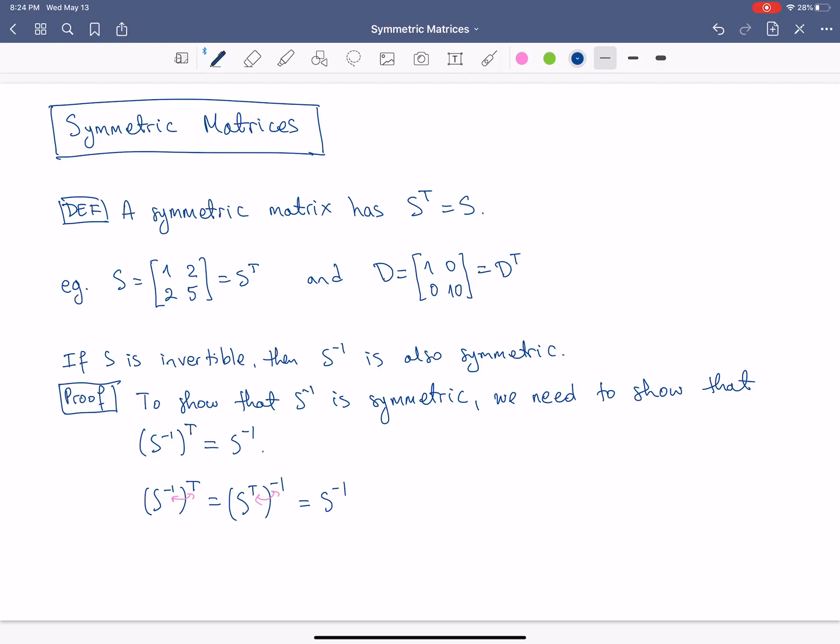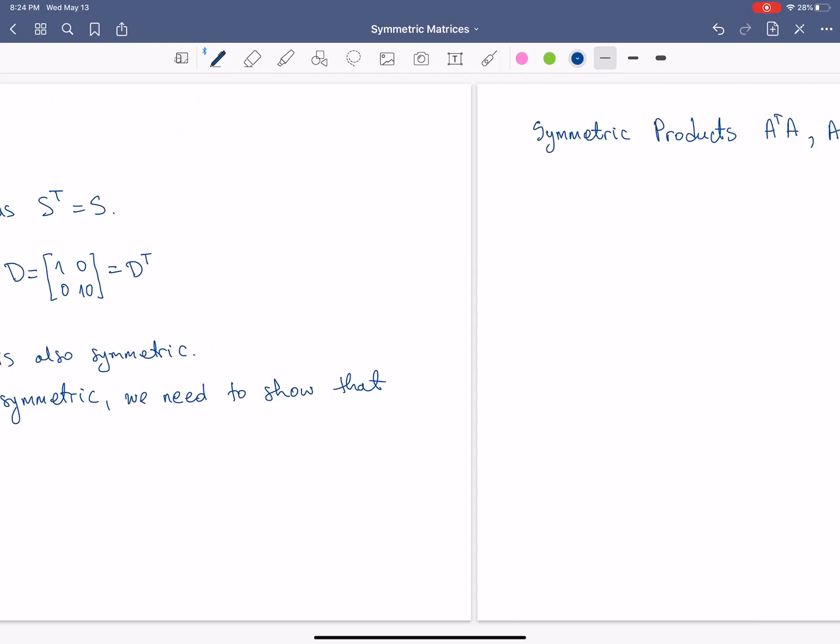So we proved this very, very, I mean, this is a one-liner proof, nothing special, but it gives us something quite powerful, that symmetric matrices are sort of a group on their own. When you try to take some basic operations like an inverse, you kind of stay in the club, if we can think of it that way.